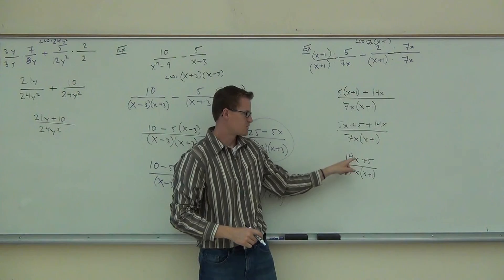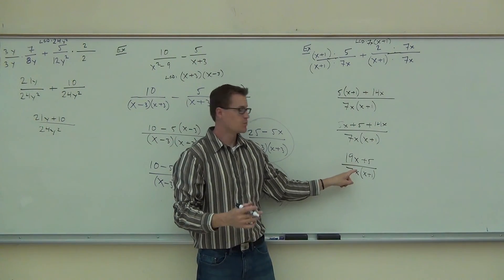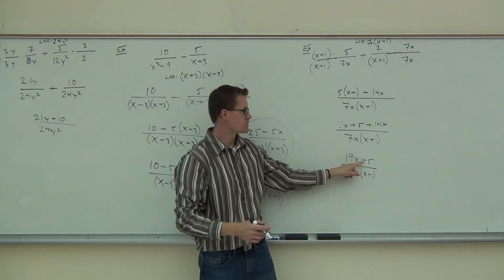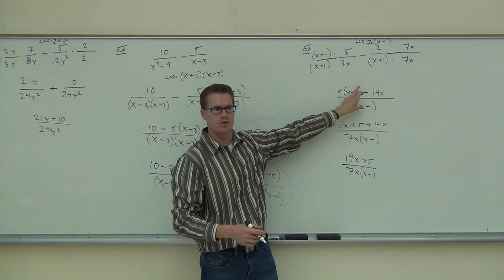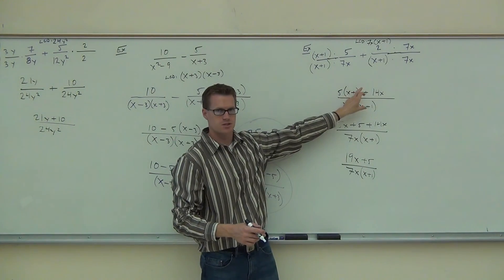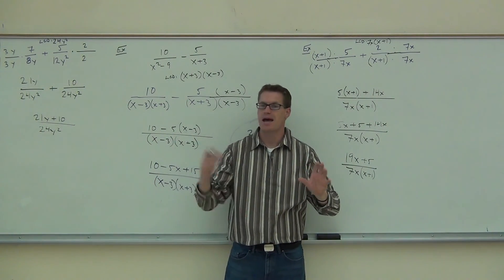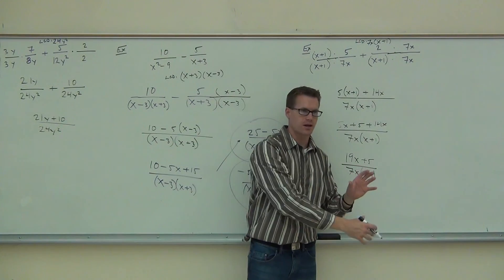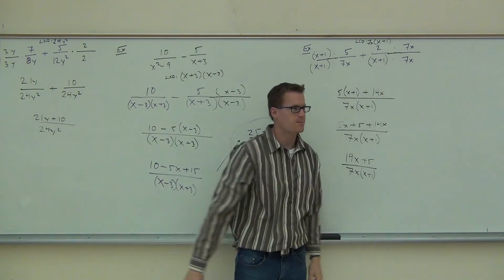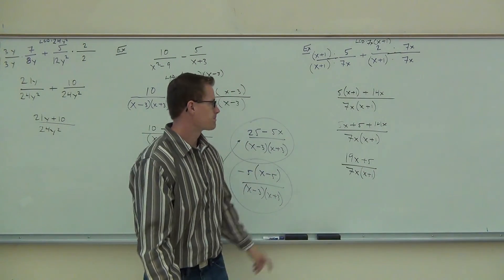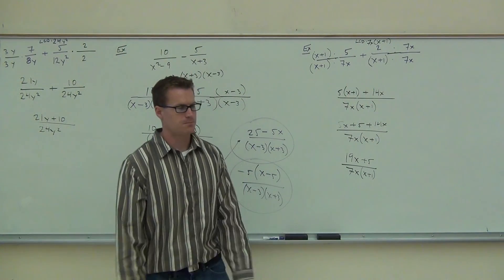Can I simplify these x's? No—it's still connected by a plus. You cannot do that until the very last step after you factor and cancel. You can't factor 19x plus 5, so you're done—leave it written like that.